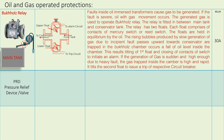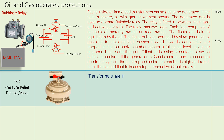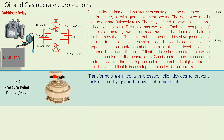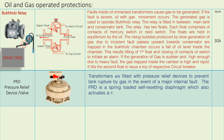Pressure Relief Device (PRD) or valve: Transformers are fitted with a pressure relief device to prevent tank rupture by gas in the event of a major internal fault. The PRD is a spring-loaded, self-resetting diaphragm which also activates a micro switch to issue a trip of the circuit breaker of the transformer.